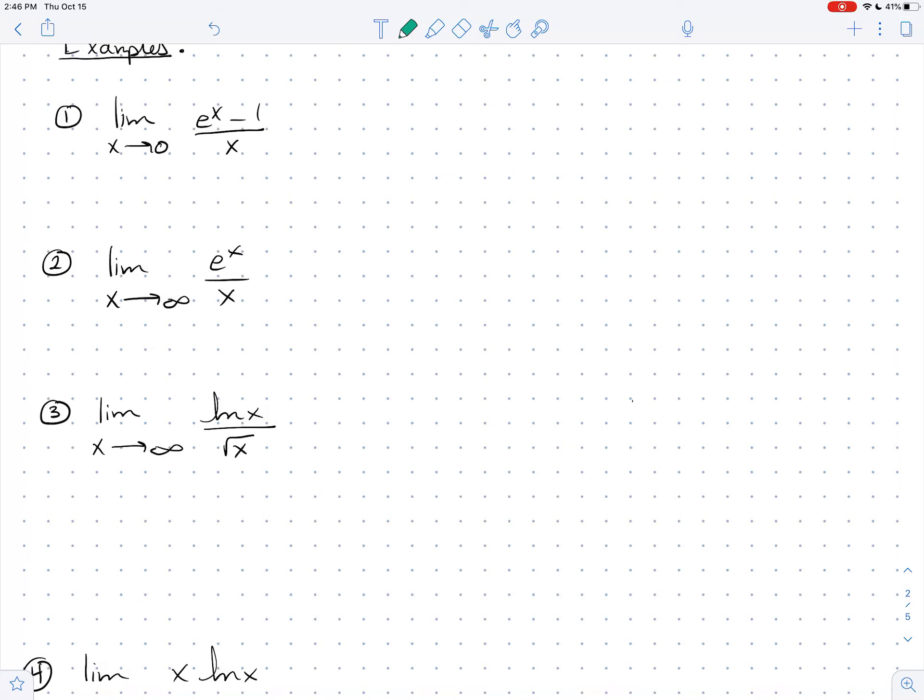Alright, so first example, I want to go back to that example that we got stuck on, and I want to try and work it out with you. So I noticed that the form here is, as x goes to 0, e to the x goes to 1, so 1 minus 1 is 0 over 0. So the form here is 0 over 0.